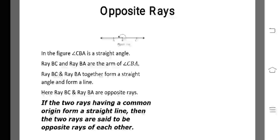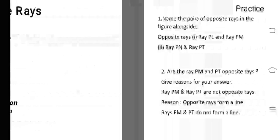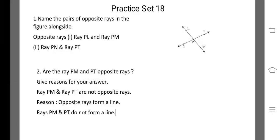Now we will move to practice set 18. Name the pairs of opposite rays in the given figure. From the figure, we can observe that Ray PL is opposite to Ray PM, and Ray PN is opposite to Ray PT. So the two pairs are PL and PM, and PN and PT.